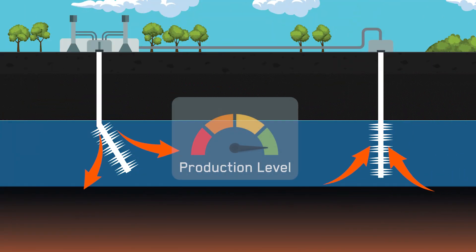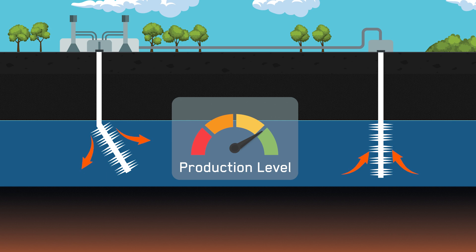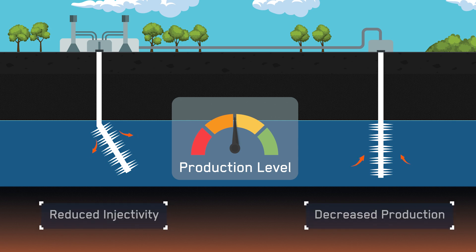After experiencing a prolonged period of decline in injectivity, a geothermal well saw production decrease to 70%. Then, following a shutdown, the injectivity index significantly dropped upon resuming operations, causing production to further decrease to 50%. Prior to implementing any remedial measures to understand the injectivity issues,